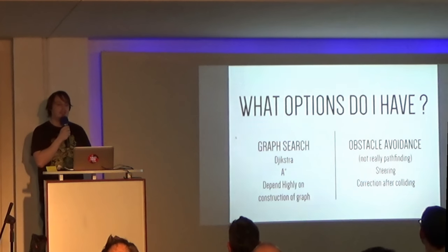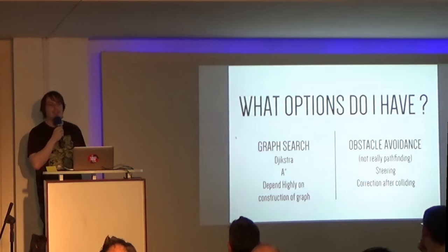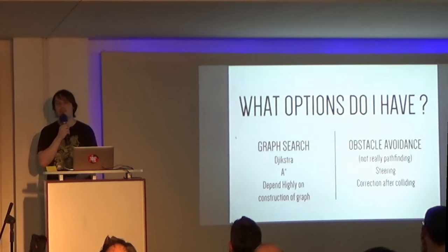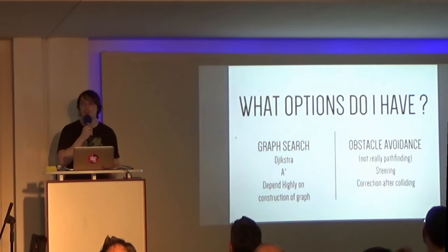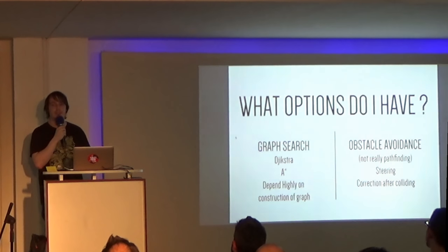So, I'll cover obstacle avoidance first. Basically, you end up with steering behavior or correcting if you run into something. Steering behavior basically works by: will I run into something if I keep on going forward? If so, evade to the left or the right, depending on which is more beneficial. That works really well for space games, for example. If there's a lot of open space and the obstacles are few and far between, then it's really easy to just steer around it and still be more or less on the right path.